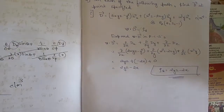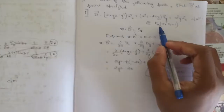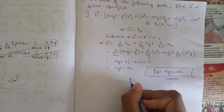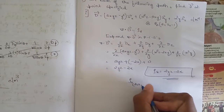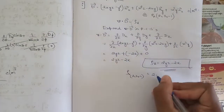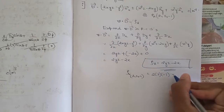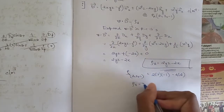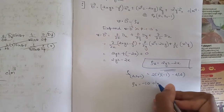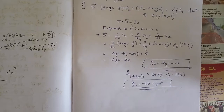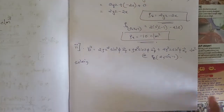So rho_v equals 2yz − 2x. Now they told us to find the numerical value at the specific point (2, 3, −1). Substituting x=2, y=3, z=−1: rho_v = 2(3)(−1) − 2(2) = −6 − 4 = −10. So after simplifying the answer we get is −10 coulombs per meter cube. That is the unit of volume charge density. This completes the first sub-question using the rectangular coordinate system.